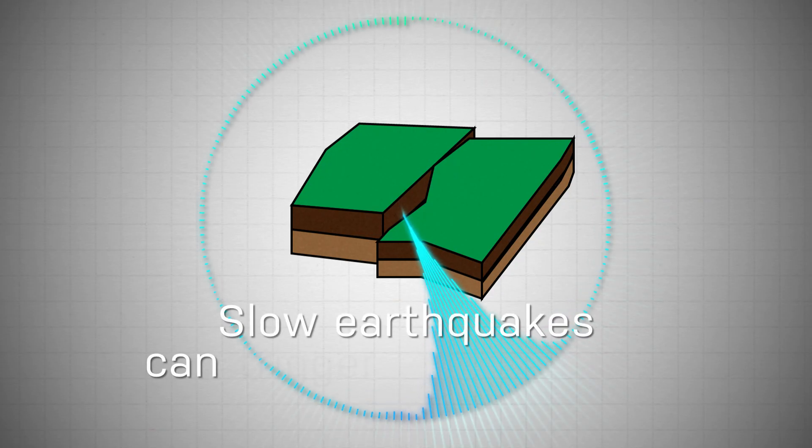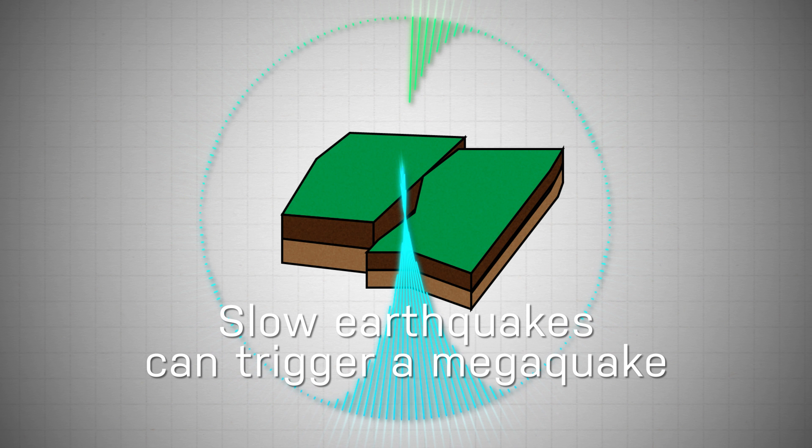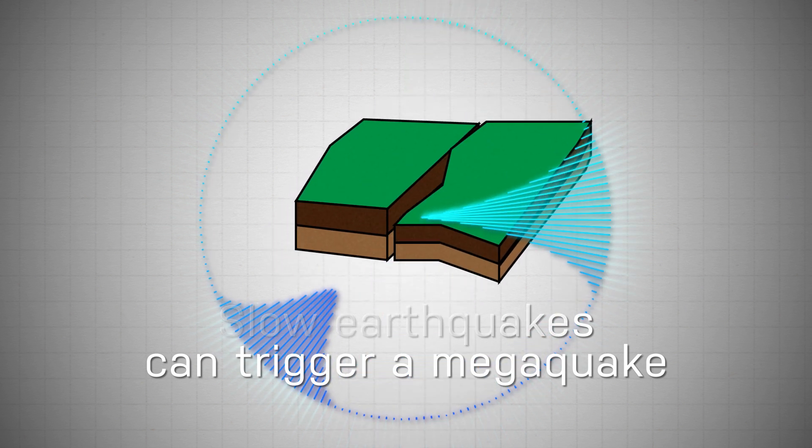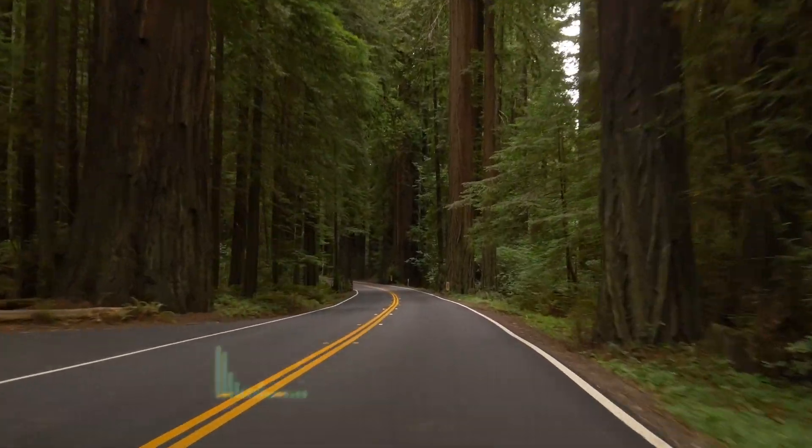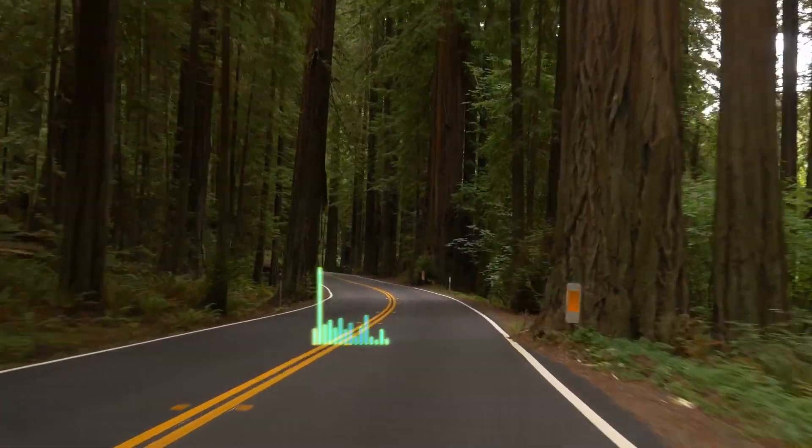The signal strength gives information about when slow earthquakes will take place. This new research using machine learning shows that the fault's behavior is not random. It's determined by basic physics principles revealed by the seismic signal.